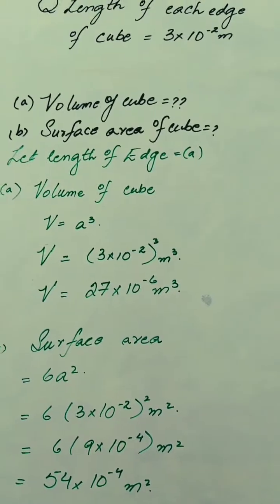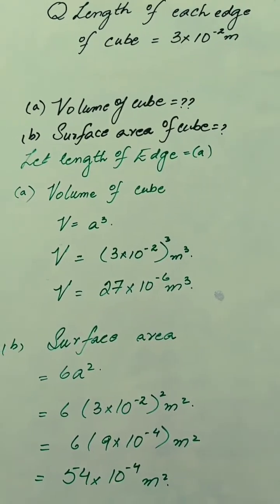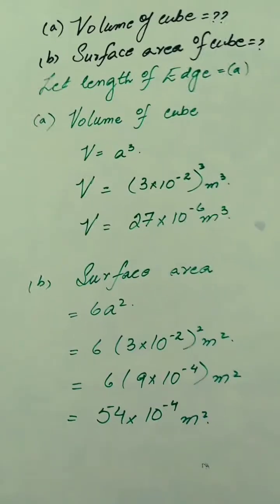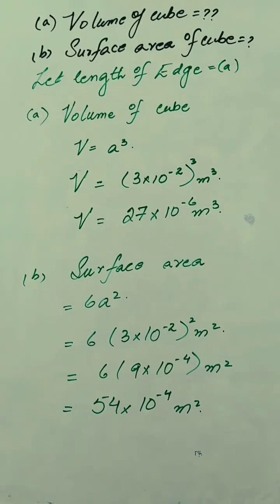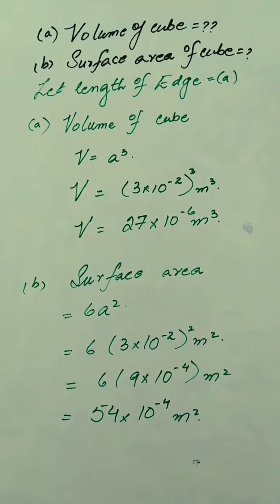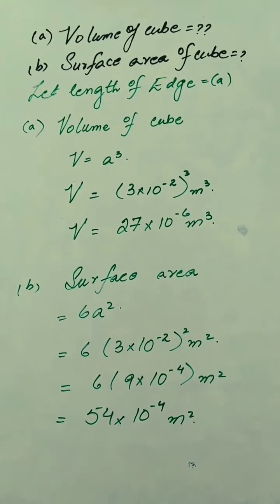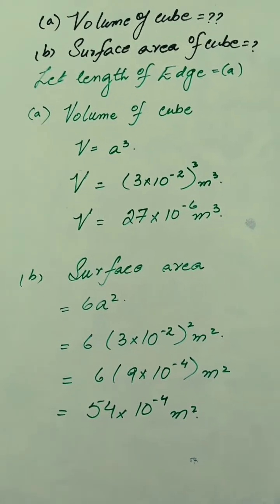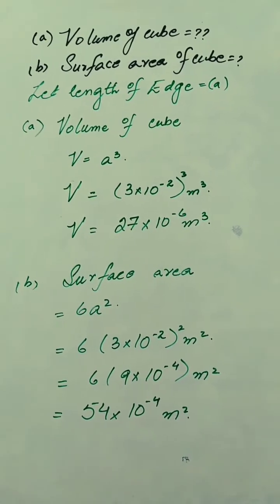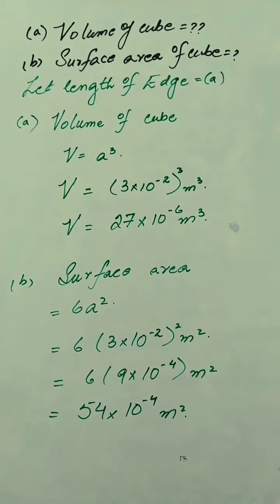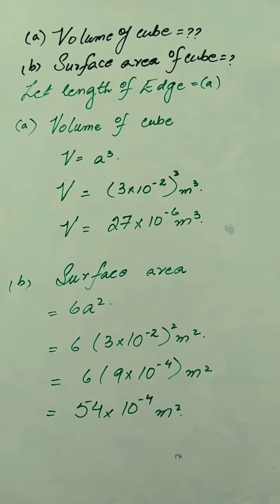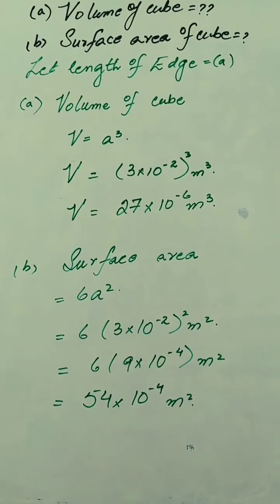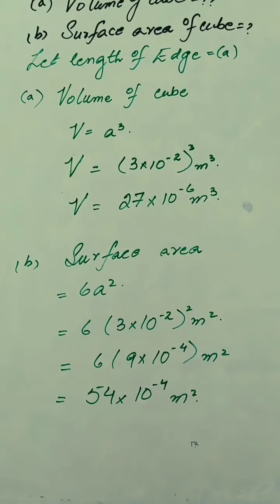Now we have another question. The length of each edge of a cube is given as 3×10⁻² meters. We have to find the volume and surface area of the cube. Letting the edge length equal a, the volume of a cube is a³. Putting in the value of a: V = (3×10⁻²)³ m³. After solving, V = 27×10⁻⁶ m³.